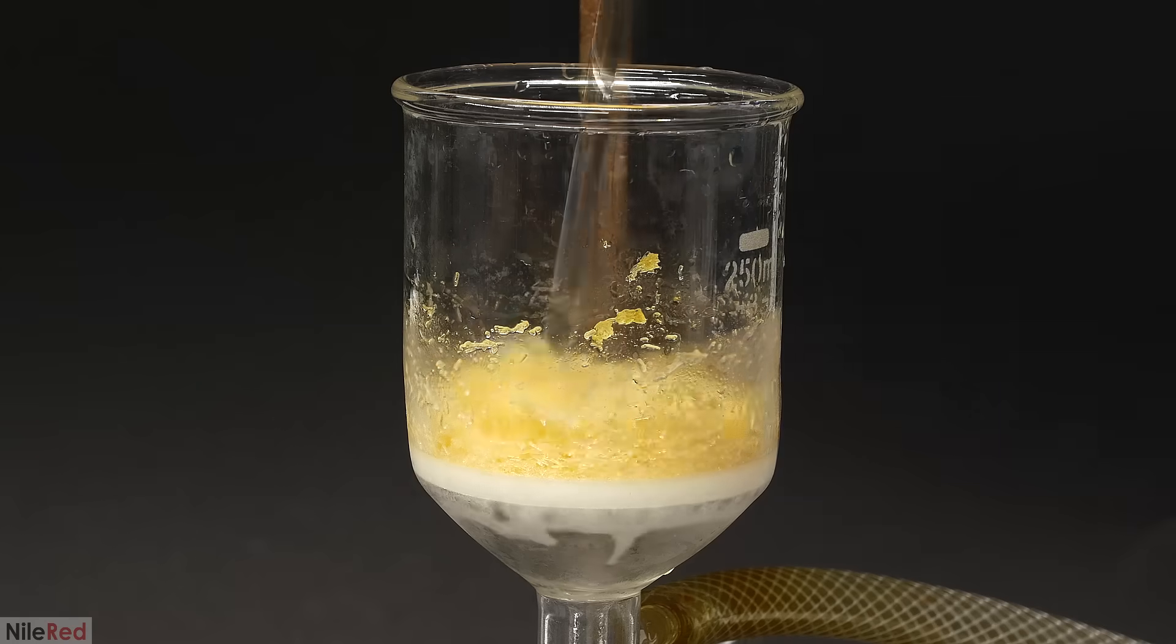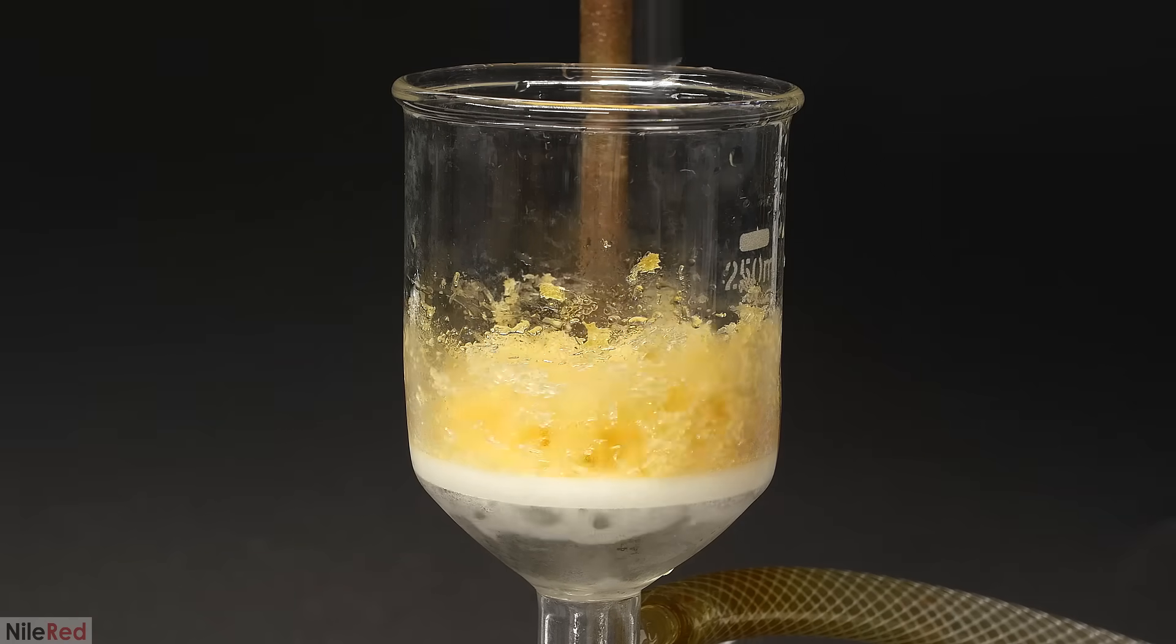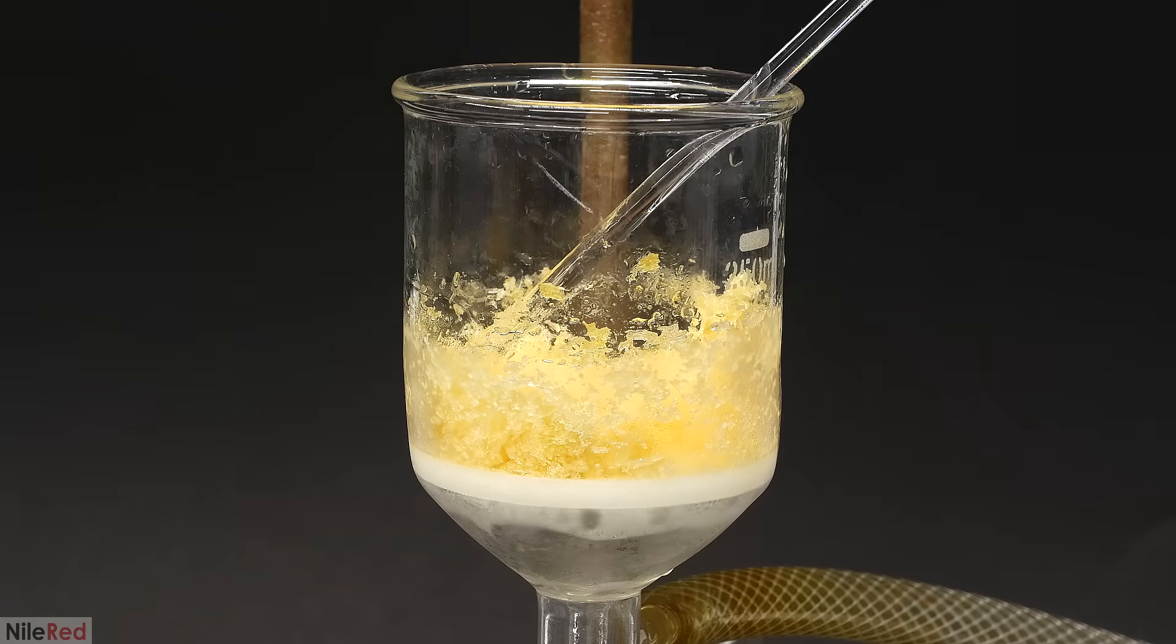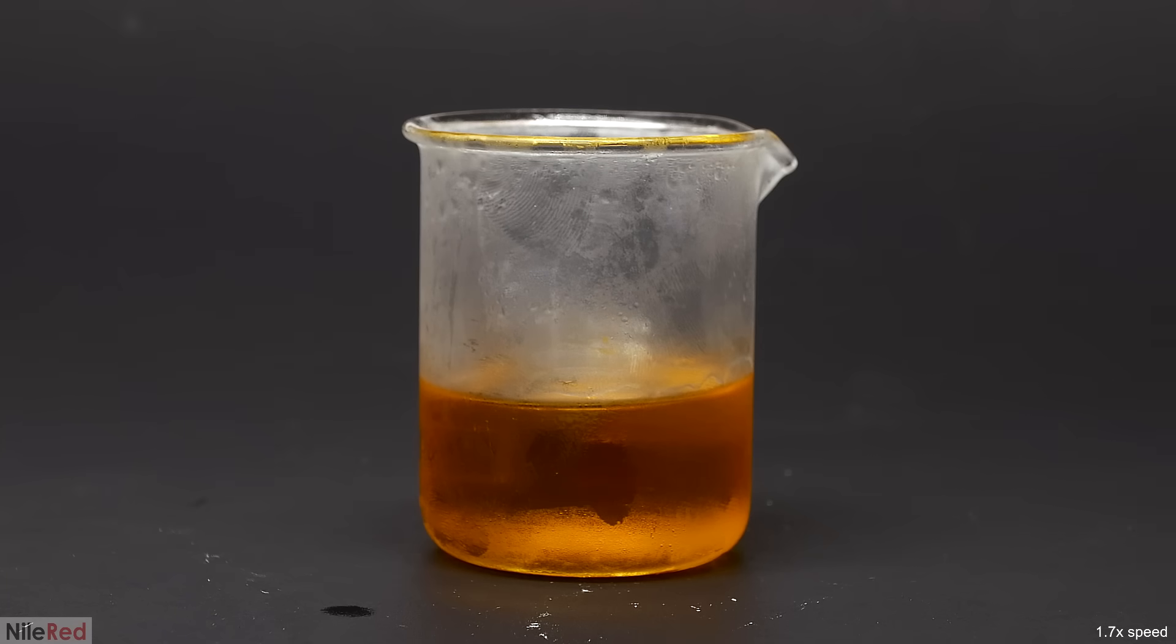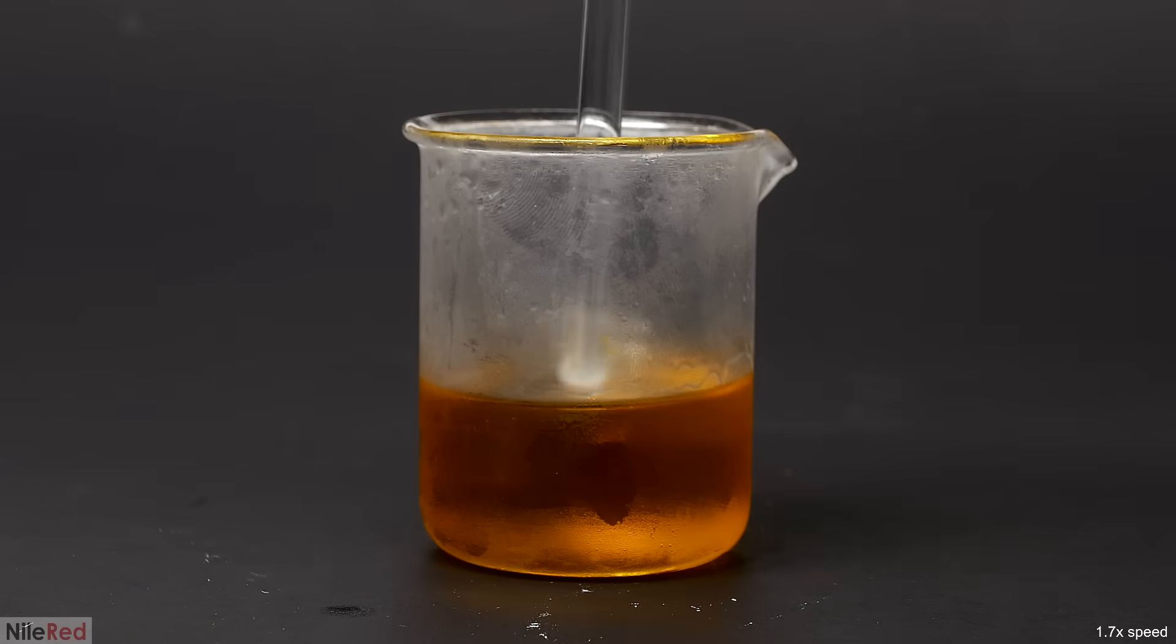Anyway, to get rid of the urochrome and any potassium nitrate that still might remain, I just need to recrystallize it a few more times from a mixture of water and ethanol. On the last run, nothing crystallized even when I put it in the freezer, which kind of scared me.